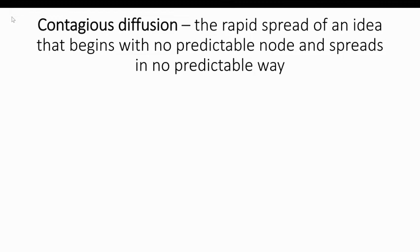The second kind of expansion diffusion is contagious diffusion, which is usually the easiest for students to understand because they've experienced it. Anything that goes viral on the internet is a great example of contagious diffusion — something like a meme is a perfect one to use.